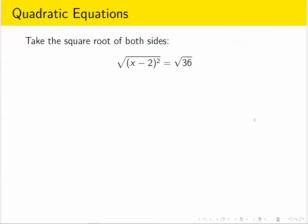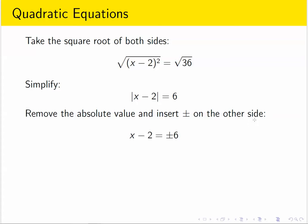The right side simplifies to 6, and the left side simplifies to the absolute value of x minus 2. And I know how to solve that. If I get rid of the absolute value, I introduce plus or minus on the other side.